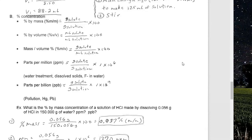There are also units used for extremely tiny concentrations, closely related to percent by mass. Parts per million (PPM) is grams of solute over grams of solution times 1 × 10⁶. Parts per billion (PPB) is grams of solute over grams of solution times 1 × 10⁹. A part per billion is a thousand times smaller than a part per million — there are 1000 PPB in 1 PPM.